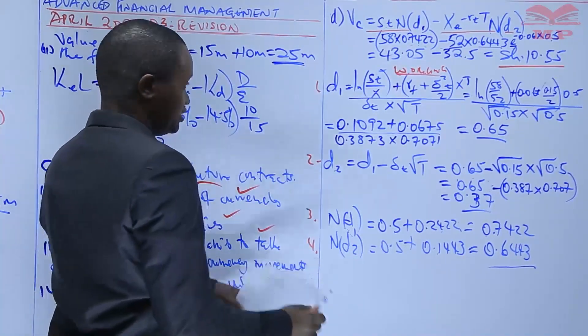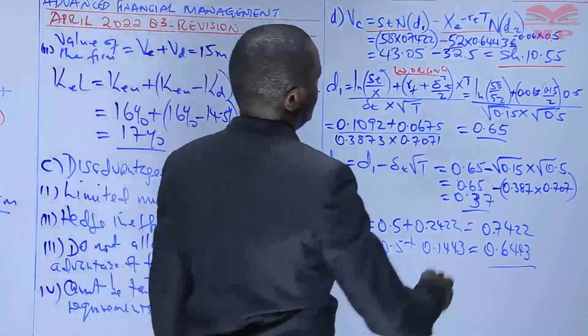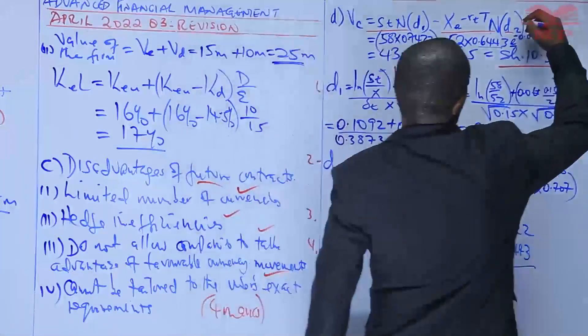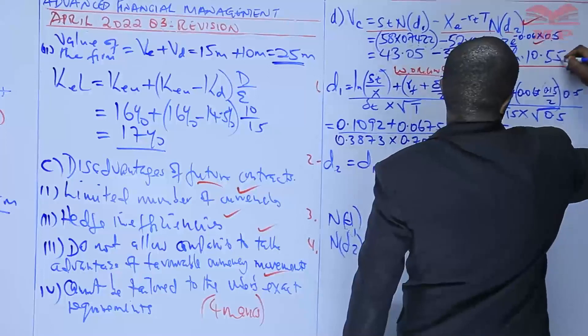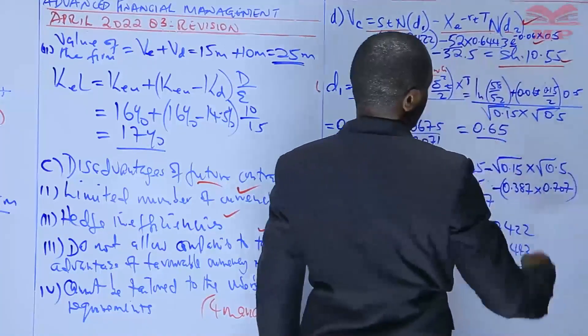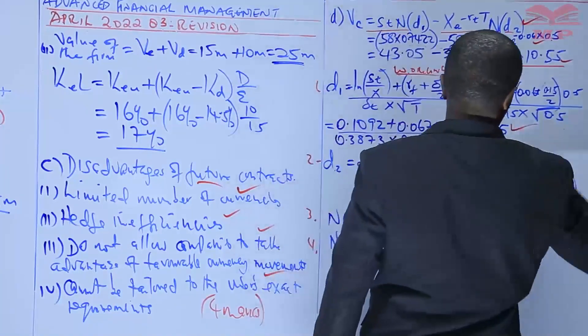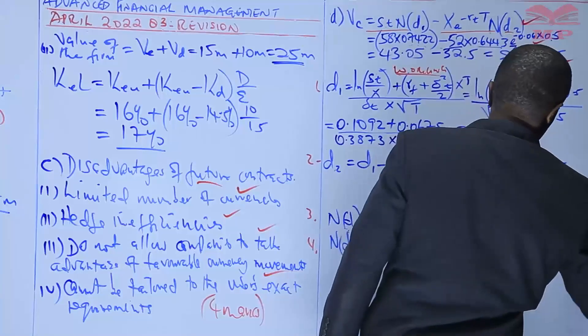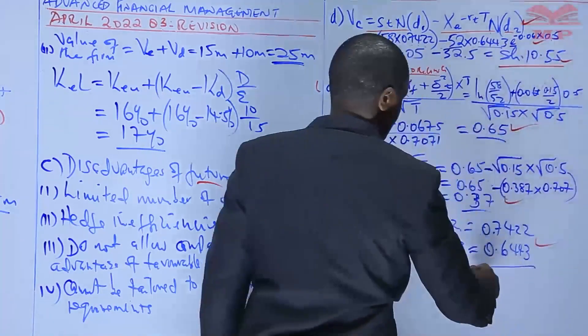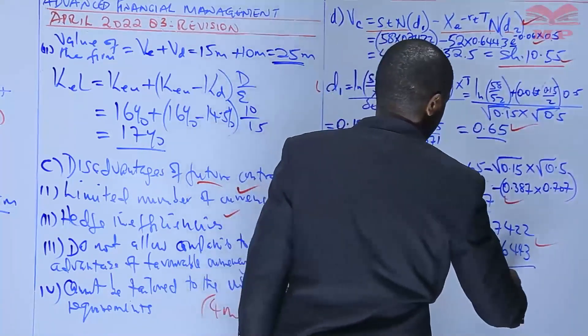How many marks? Six marks. One, two, three, four, five, six. Six marks.